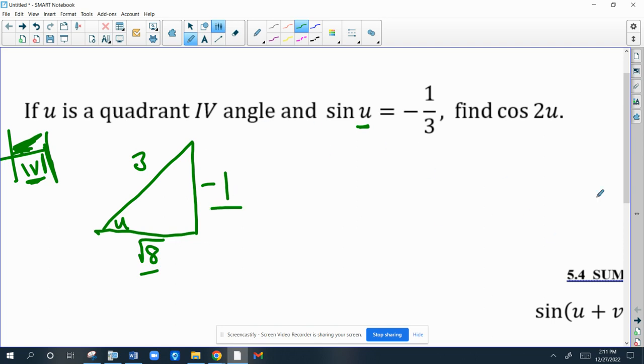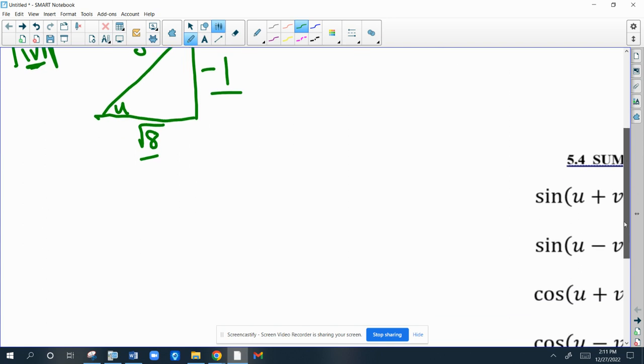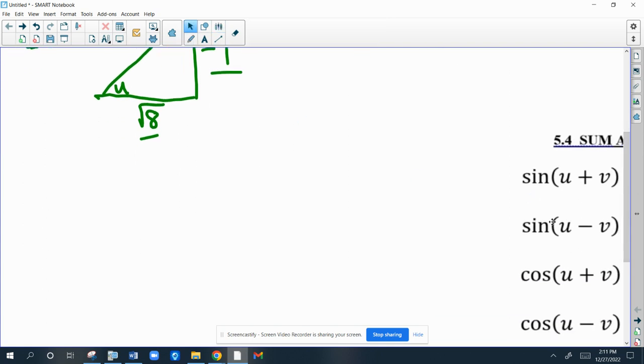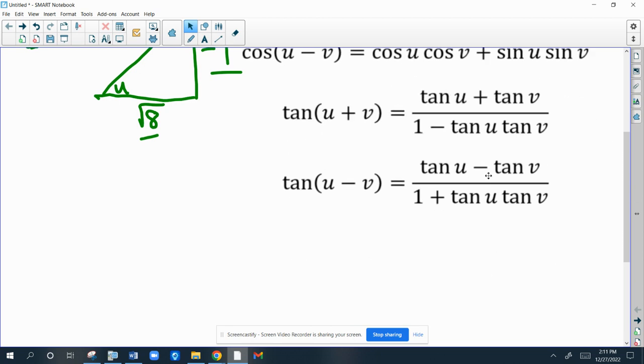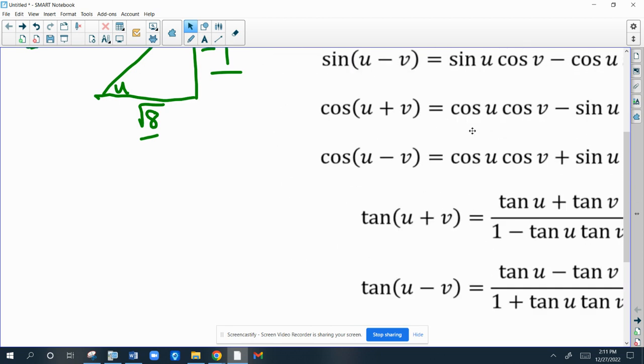So now we have to figure out what cosine of 2 times that angle is. So we're going to refer to the double angle formulas. Actually, I don't have them prepared here.